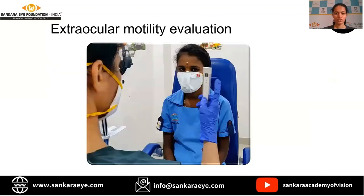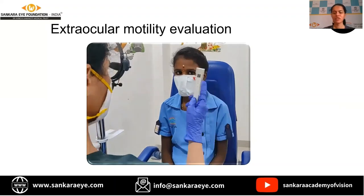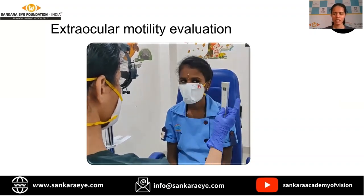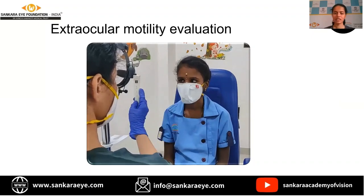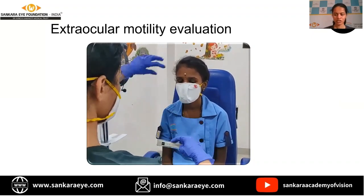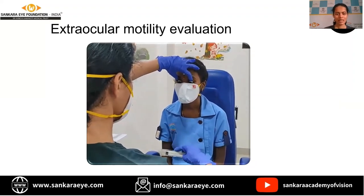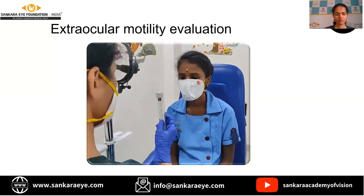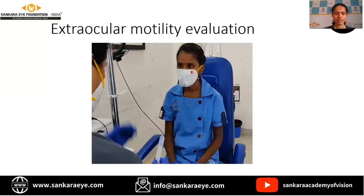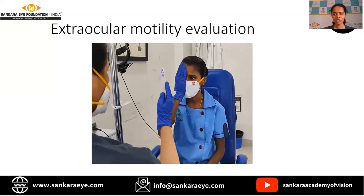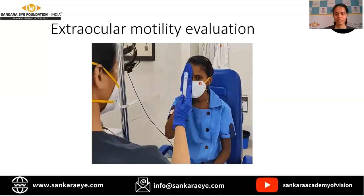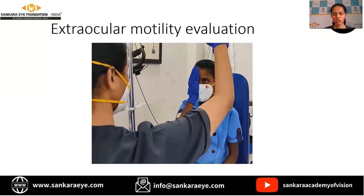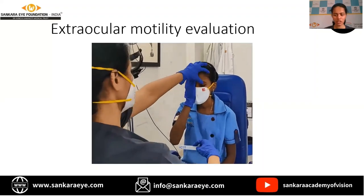The patient is seated erect and comfortably in front of the examiner. Using either a torchlight or a target, the patient is asked to look in all nine cardinal positions of gaze. We make note of any underaction or overaction. Versions are checked first, followed by ductions. Any overaction or underaction is described by the time and grade of underaction or overaction.